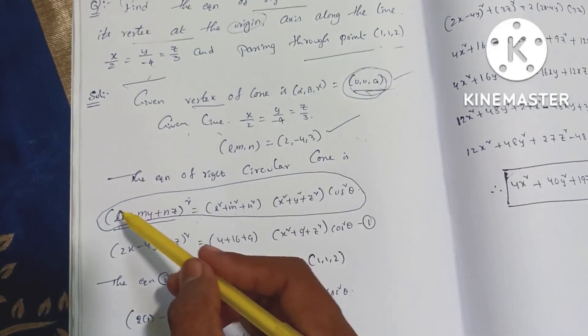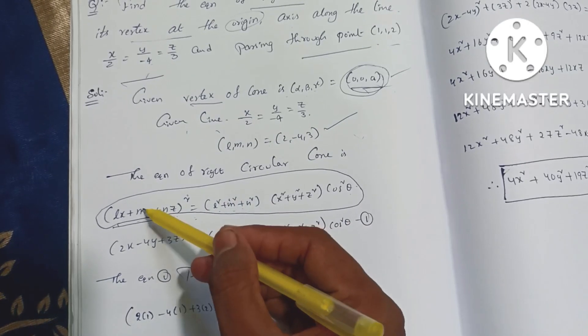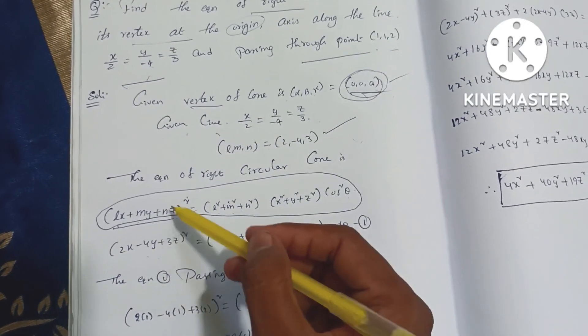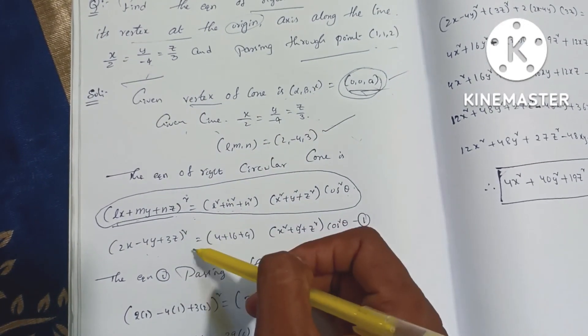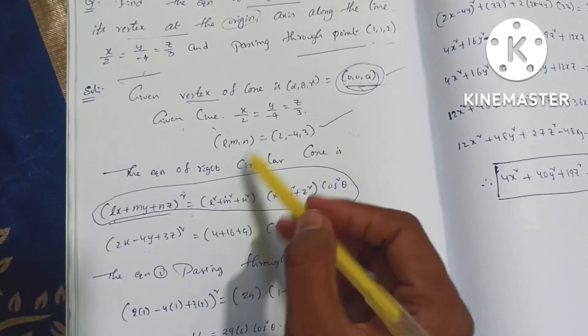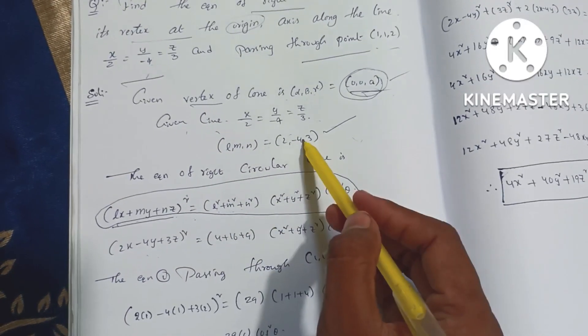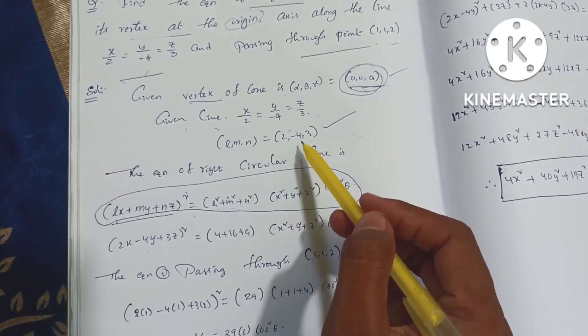Substituting L=2, M=−4, N=3: L² = 4, M² = 16, N² = 9. So L² + M² + N² = 29. We now compute cos²θ using the given point on the cone.